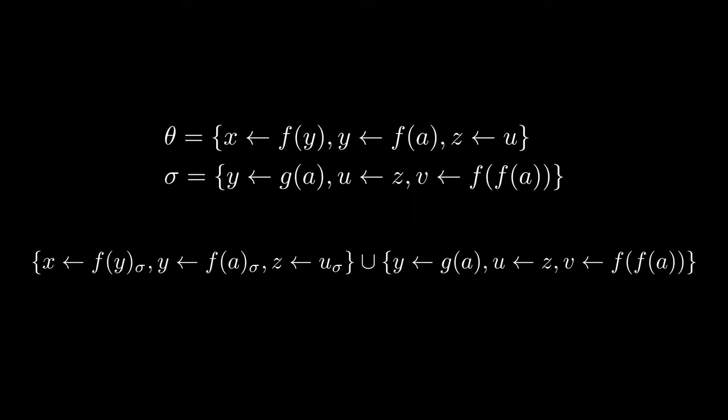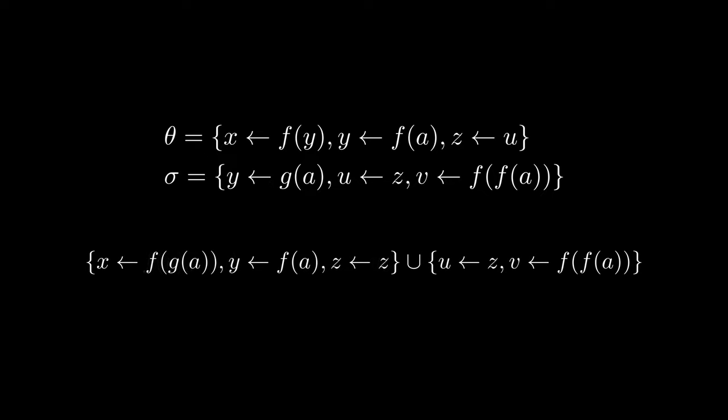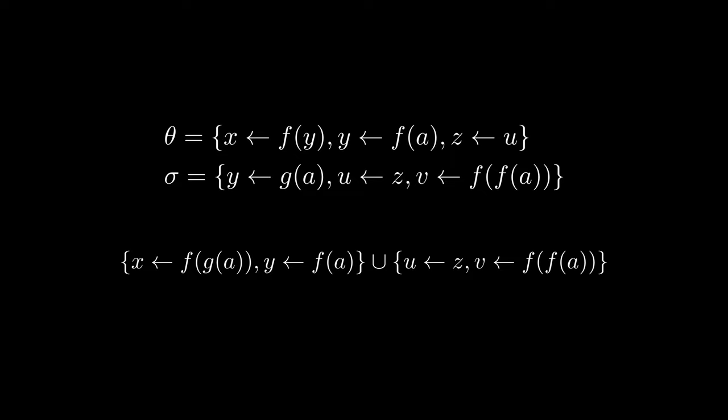We will also remove from sigma any pairs whose variable is already remapped in theta. In this case, we must remove the pair containing the variable y. After performing the substitutions in the first set, we can notice we are left with the pair z becomes z, which should be removed since substituting a variable with itself wouldn't make any sense. Finally, we can now simply combine the two sets.